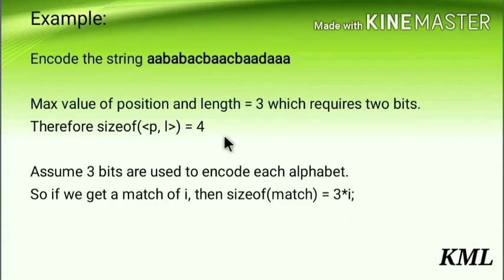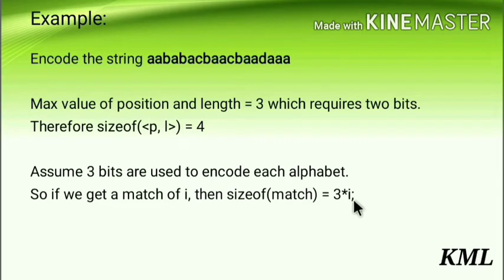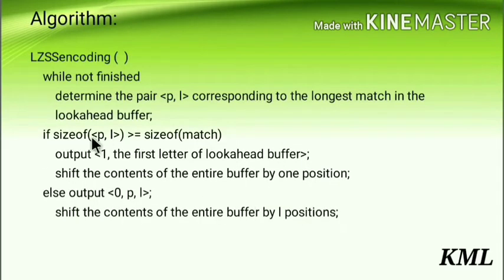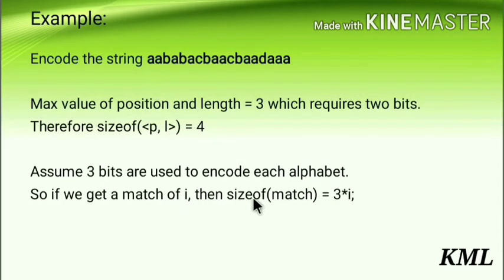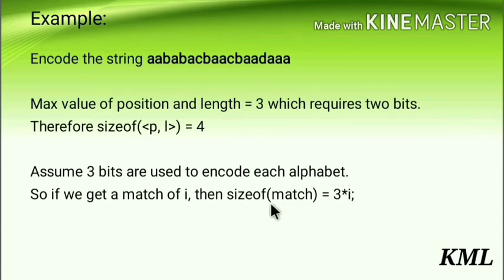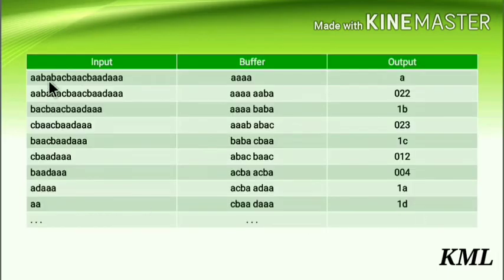Next, it is given that 3 bits are used to encode each alphabet. So whenever you get a match of length i, you multiply i by 3 to get the size of match. This size of match is used in the algorithm's condition. These are the two initial conditions given in the problem.